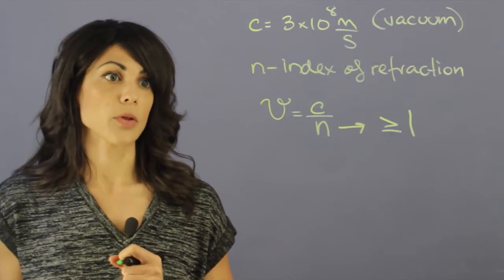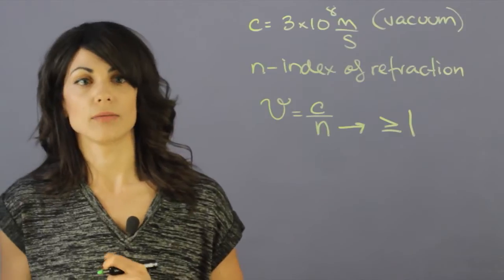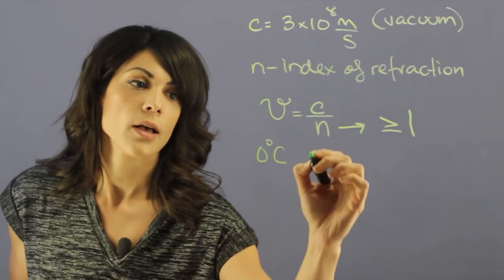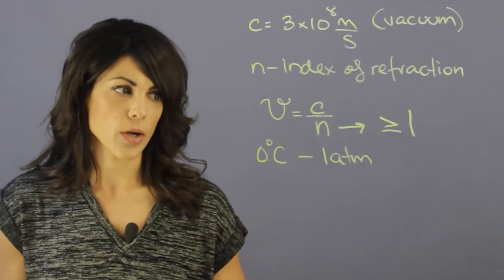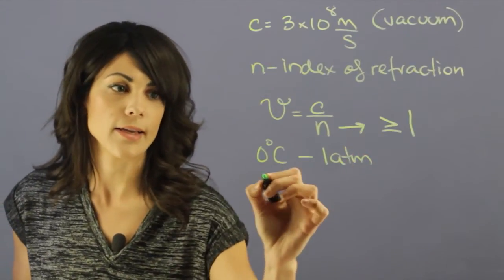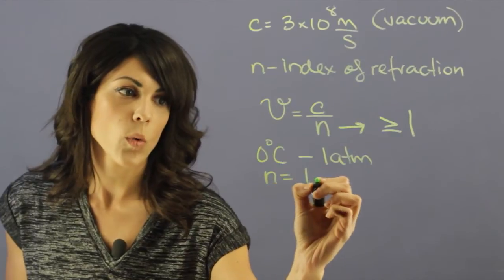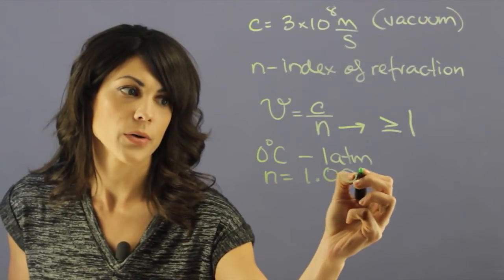Let's look at what it is at 0 degrees Celsius at 1 atmosphere, which is pretty much surface level or sea level. The index of refraction here is 1.003.